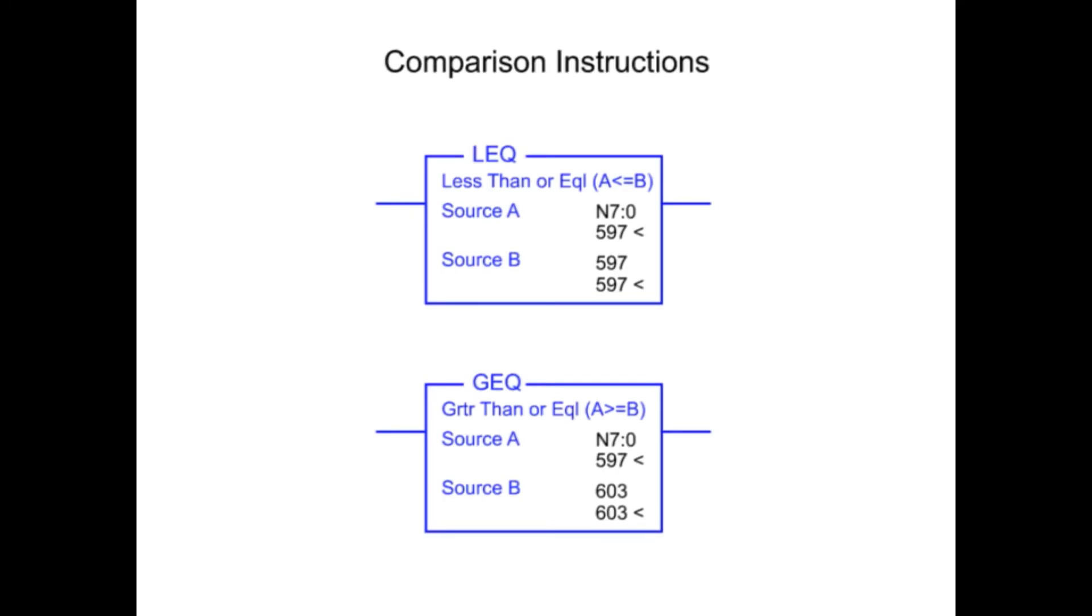A common method of temperature control is an on-off control system. Using comparison instructions in a PLC program, outputs are energized when the set point is reached.